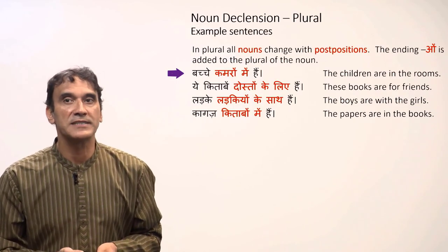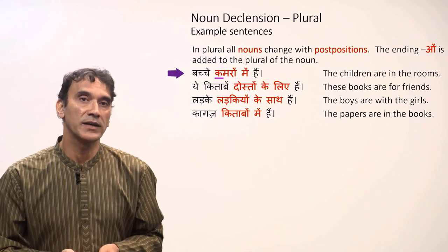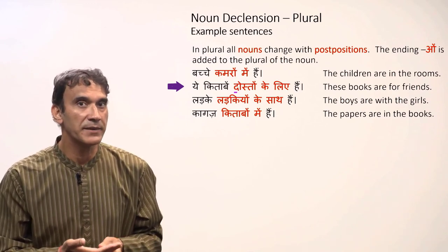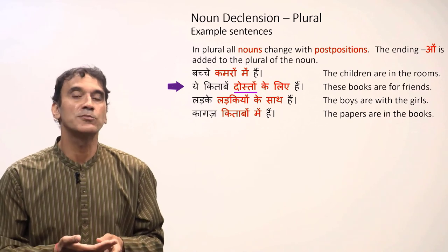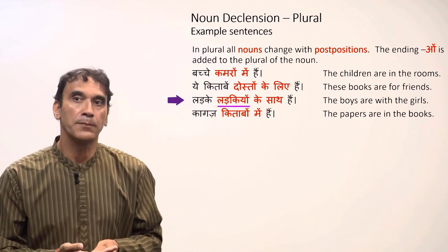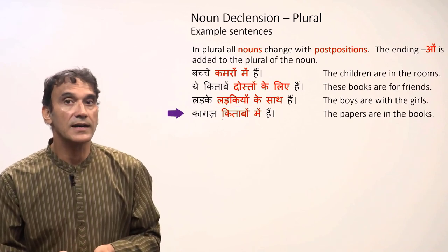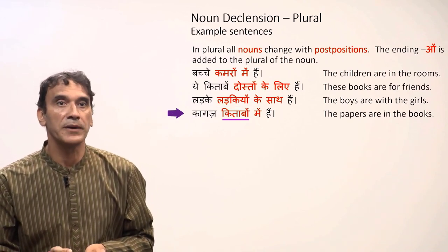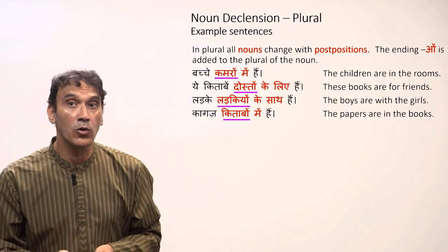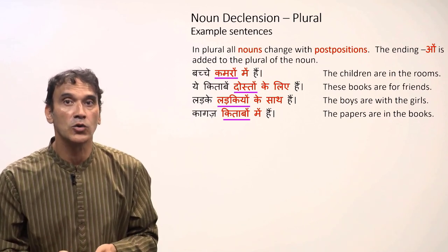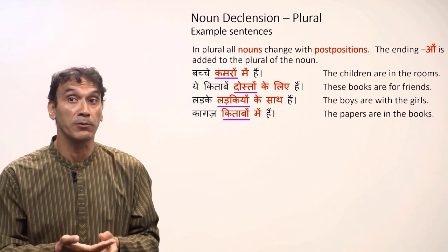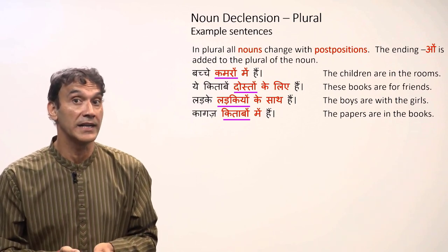Let's take some example sentences with plural oblique forms. 'Bache kamron mein hain' — the children are in the rooms. 'Yeh kitabein doston ke liye hain' — these books are for the friends. 'Ladke ladkiyon ke saath hain' — the boys are with the girls. 'Kaagaz kitabon mein hain' — the papers are in the books. All of these — 'kamron,' 'doston,' 'ladkiyon,' 'kitabon' — end in '-on' because they are plural and have a postposition.